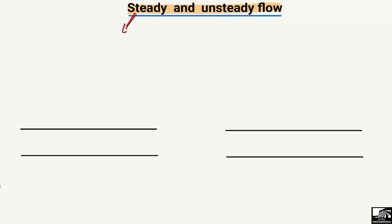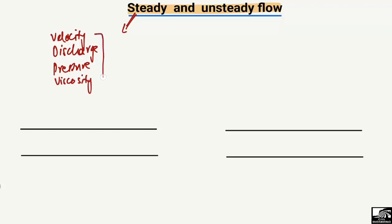Steady flow is a type of flow where the properties of the fluid are not changing with time. For example, the velocity of the fluid, the discharge of the fluid, the pressure of the fluid, or the viscosity of the fluid. When these properties are not changing with respect to time, such type of flow in the pipe is known as steady flow.